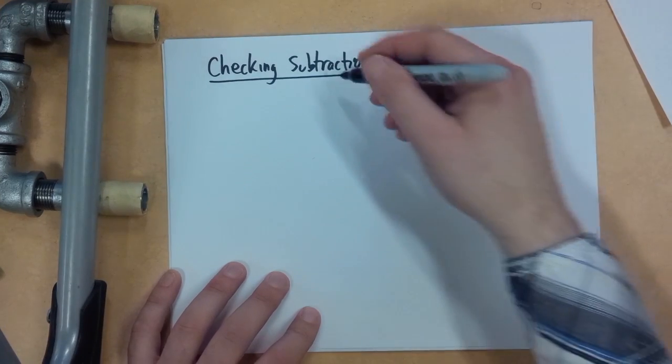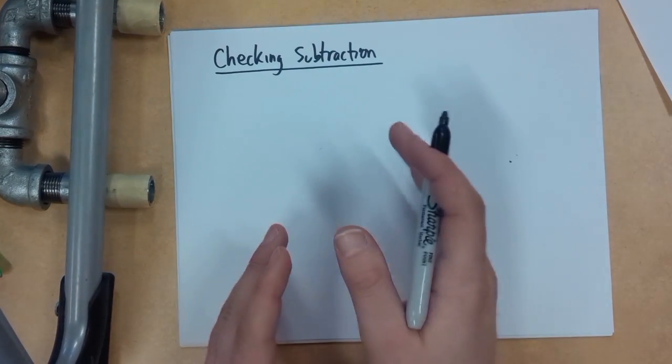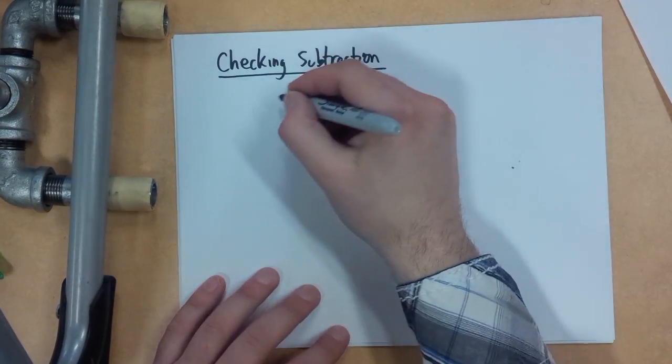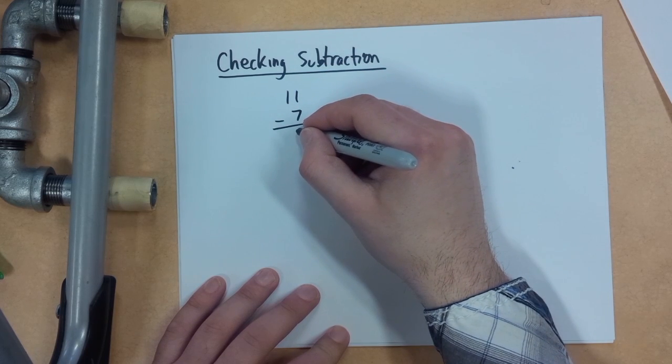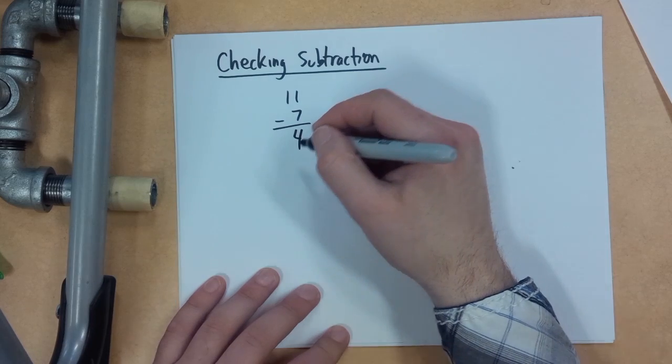Now what we're going to think about is if we do something like subtraction, 11 minus 7 equals 4. So I went one way to get a result.